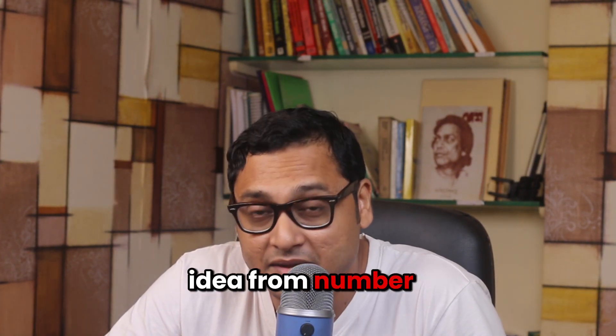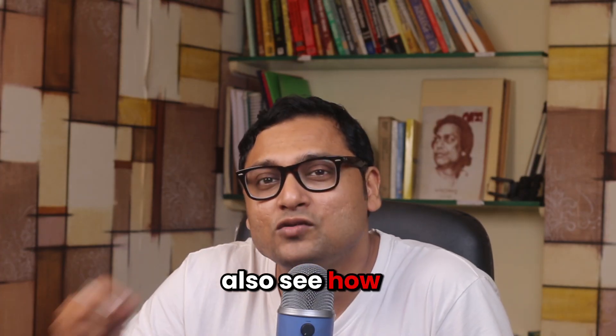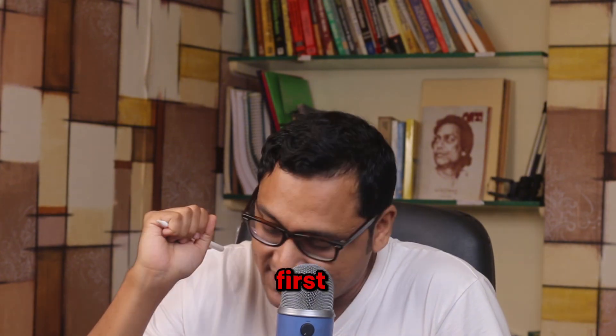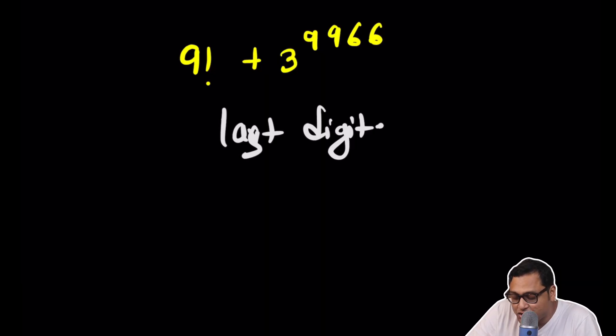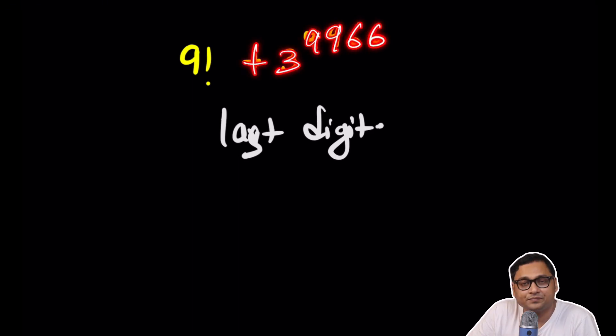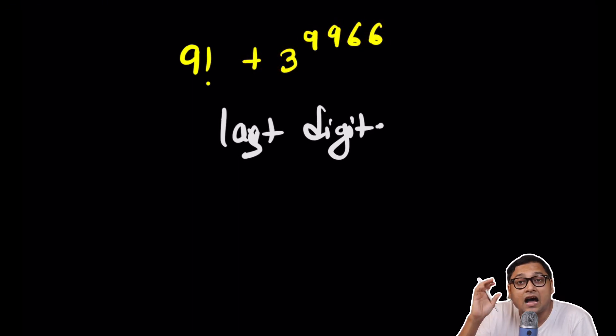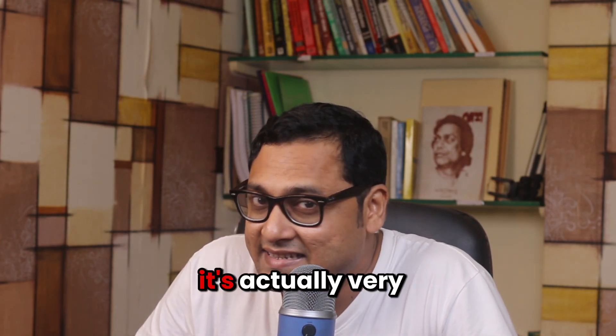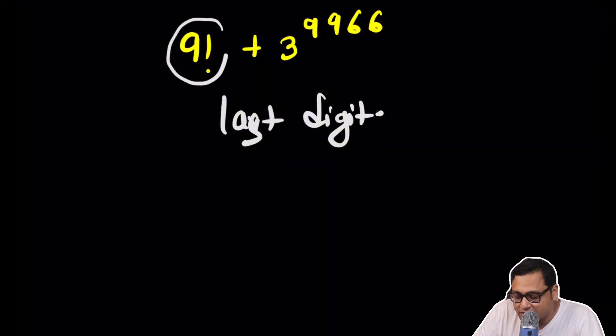Hello students, this is Ashini from cheta.com. In this video we will learn about a very simple idea from number theory, but we will also see how this simple problem can become easily very complicated. The problem says there is a huge number called nine factorial plus three to the power 9966. The question is how can you find the last digit of this number? It seems quite complicated, but if you start unraveling it, you will see it's actually very simple.